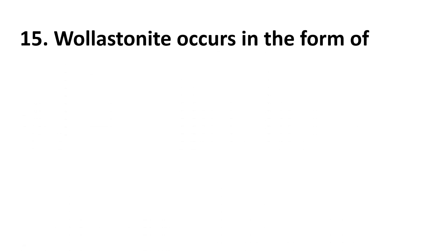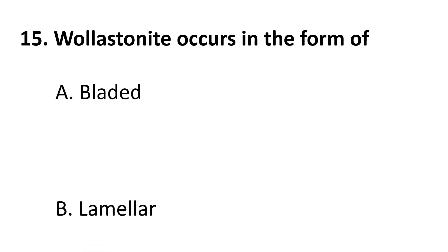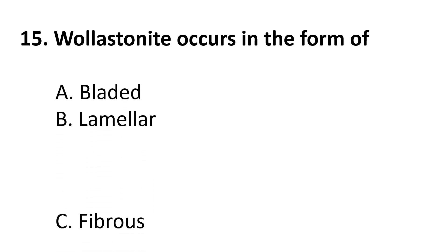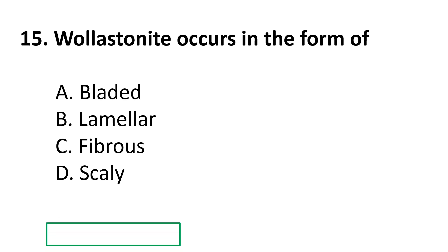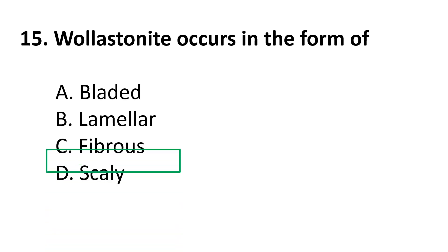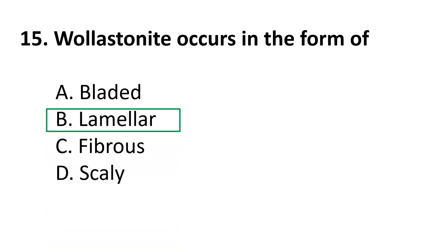Question 15: Wollastonite occurs in the form of — A. bladed, B. lamellar, C. fibrous, D. scaly. The correct answer is B, lamellar. This is a distinguishing property of wollastonite.